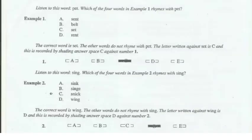Test 5. In this test, the word that you will hear does not appear on your word list. That word only rhymes with one of the words on the list. Listen to this word: pet. Which of the four words in example 1 rhymes with pet? The correct word is set. The other words do not rhyme with pet. The letter written against set is C, and this is recorded by shading answer space C against number 1.